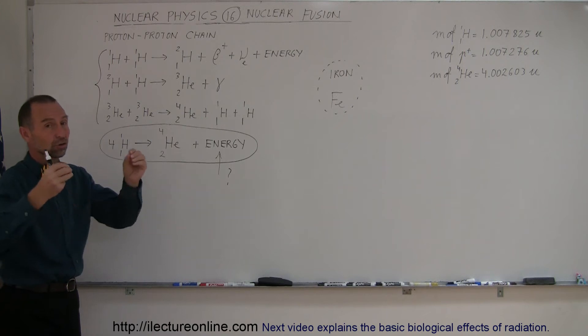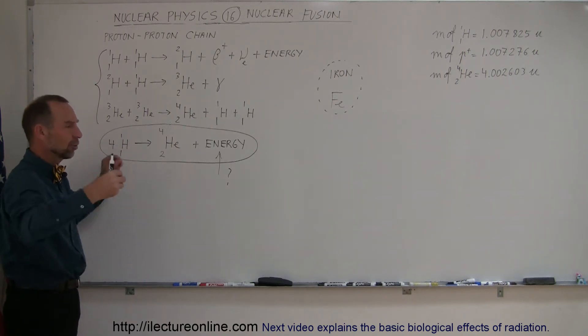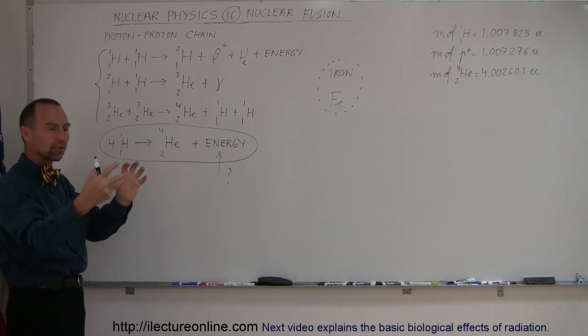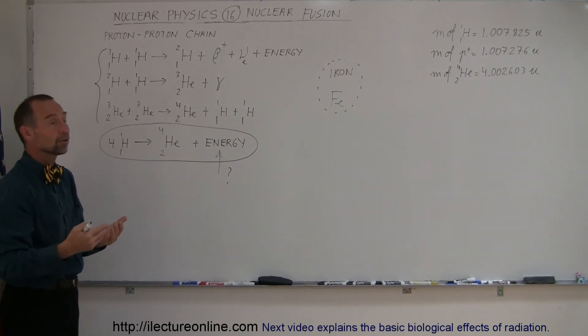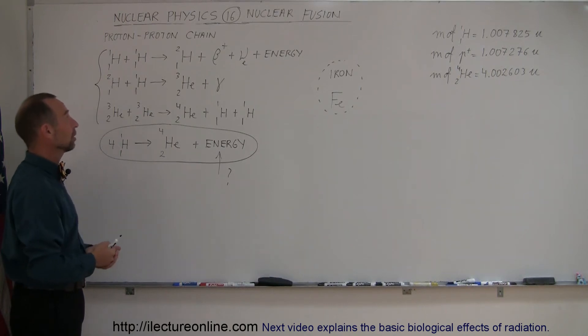Hydrogens, since they're positively charged, normally don't like to be close together. So it takes an enormous amount of speed for them to come close enough for the strong nuclear force to take over and grab them and hold them together. Temperatures required to attain these speeds are at least 10 million degrees.